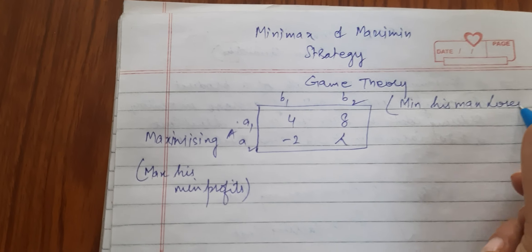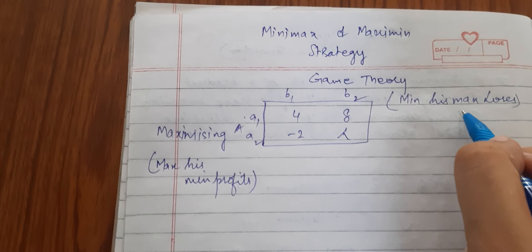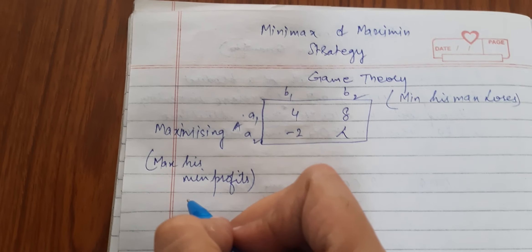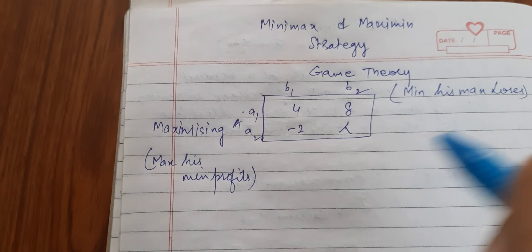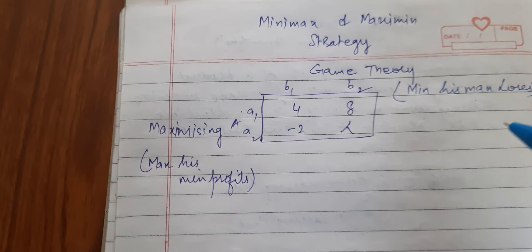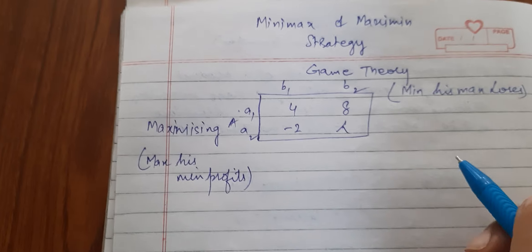Remember this point. So he is the losing player and he is the gaining player. The gaining player wants to maximize his minimum profits, and the losing player wants to minimize his maximum losses.